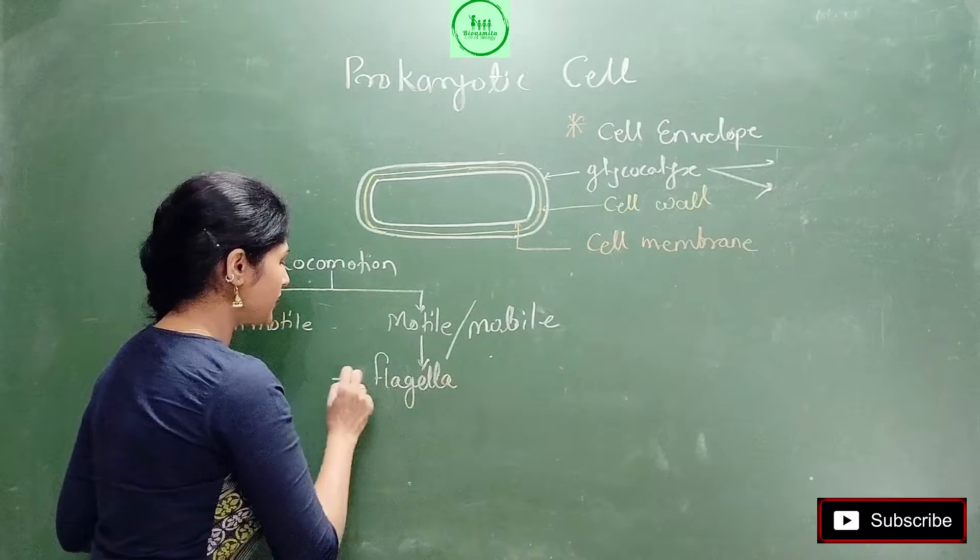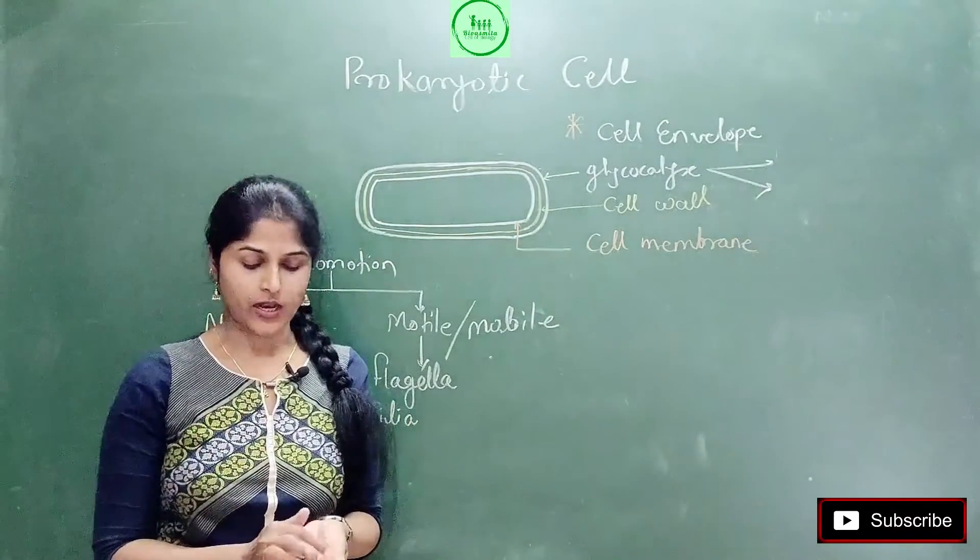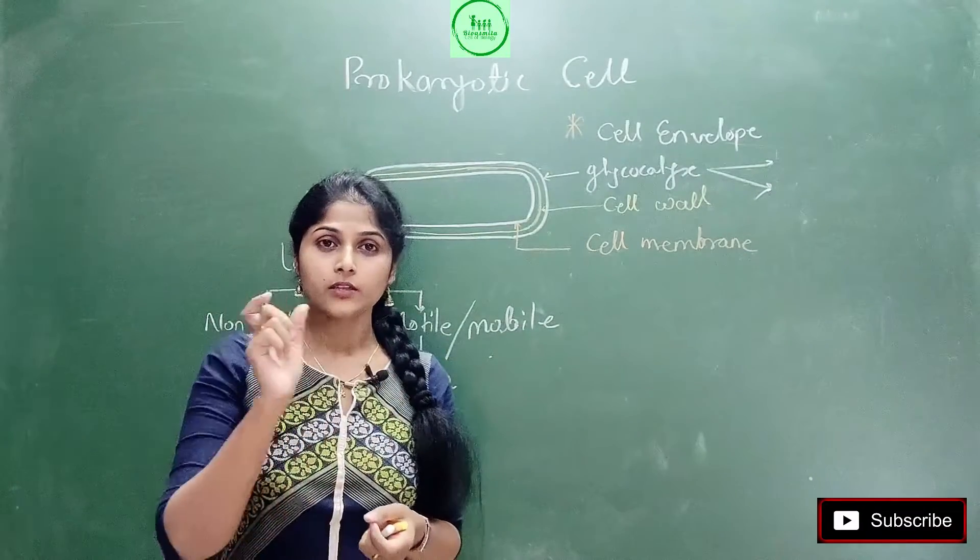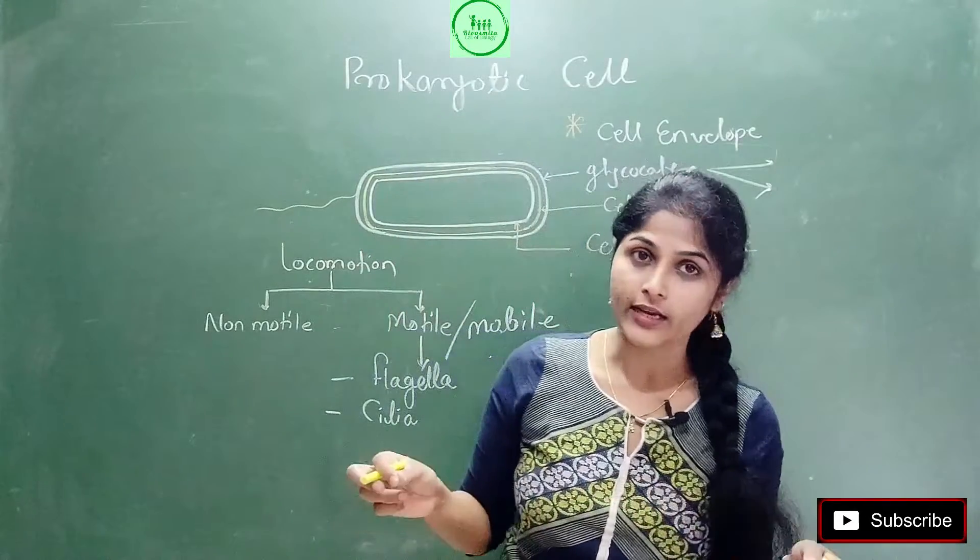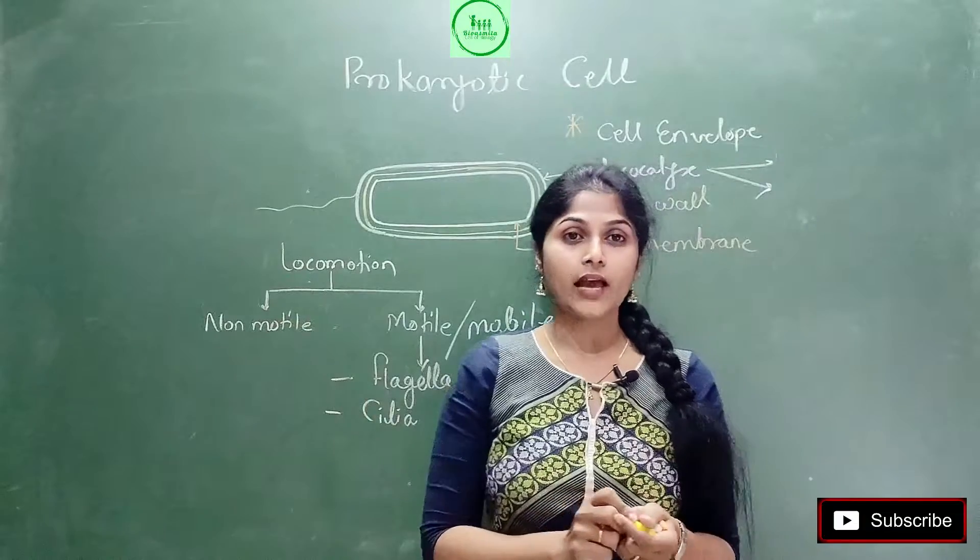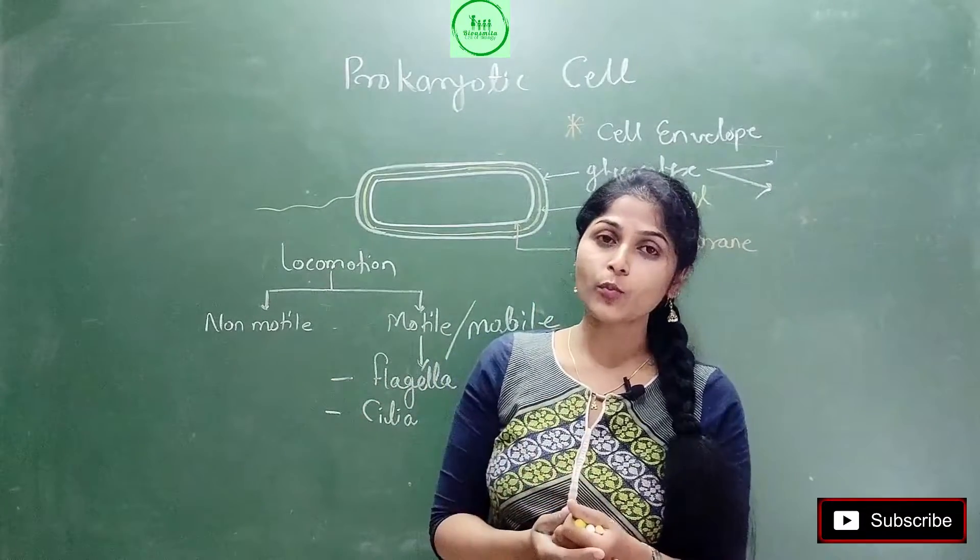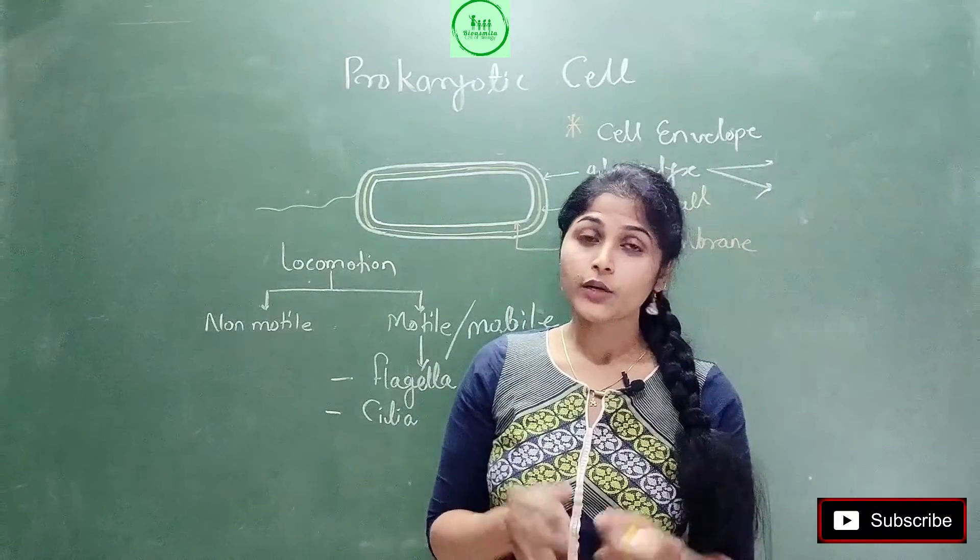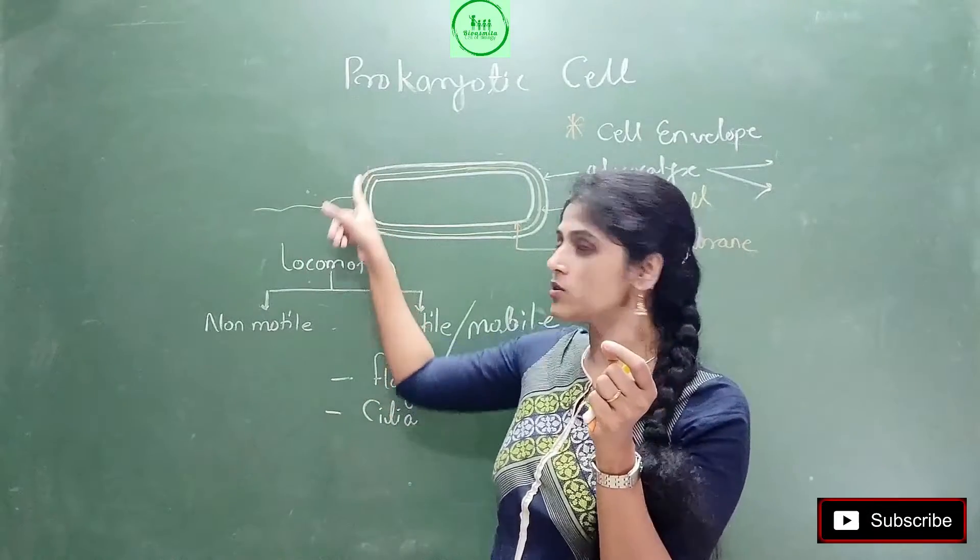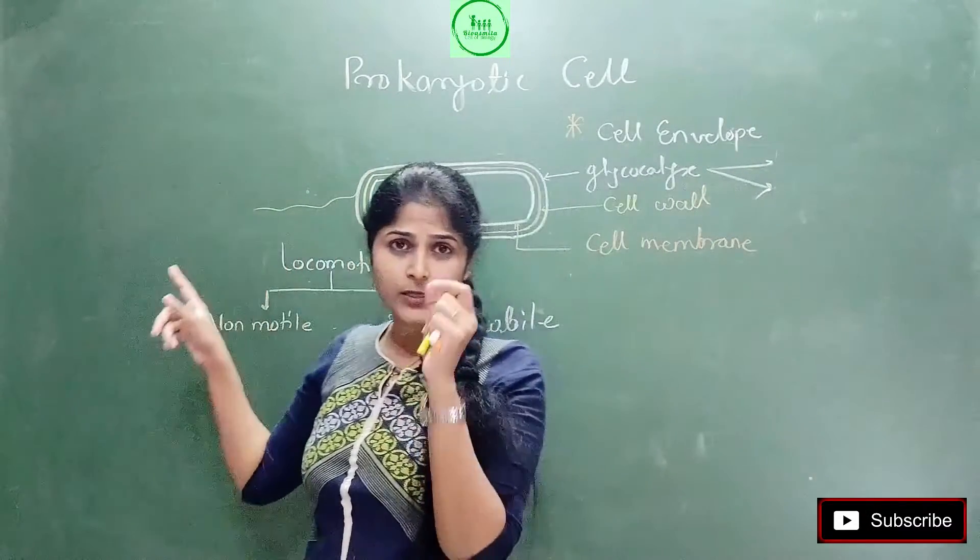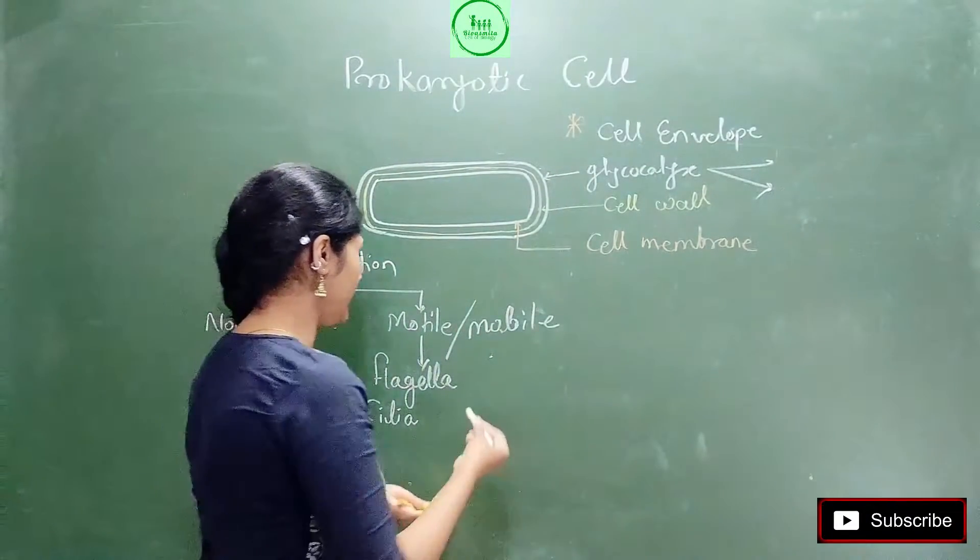For the locomotion purpose, bacteria have two cell organelles. One is called flagella and another is called cilia. Now let's discuss flagella. Flagella are long thread-like structures present on the surface of bacteria. Keep in mind it's a microscopic structure but long and thread-like. Every flagella has three parts: it has a basal body, it has some rings, and it has a filament.